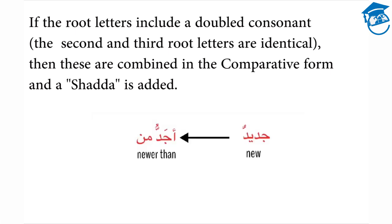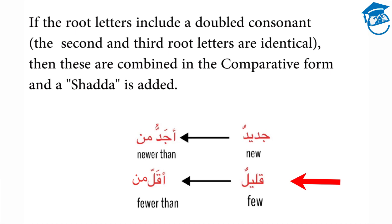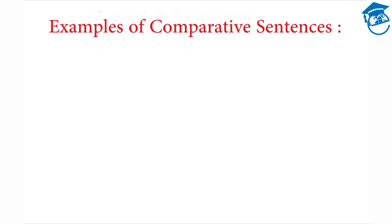For example, jedidun means new. To make it comparative, we combine the two daos at the end and add aleph with hamza at the beginning: jedidu min, meaning newer than. Similarly, qalilun means few. To say fewer than, we add aleph with hamza at the beginning and combine the two lams at the end with a shedda: aqalu min, meaning fewer than.